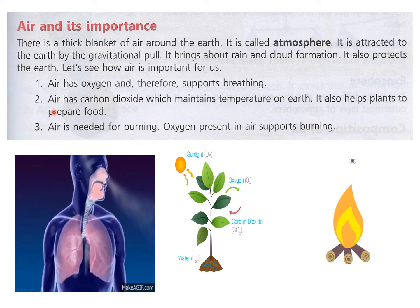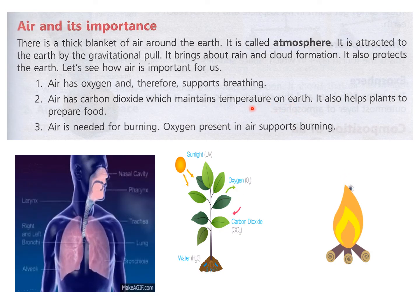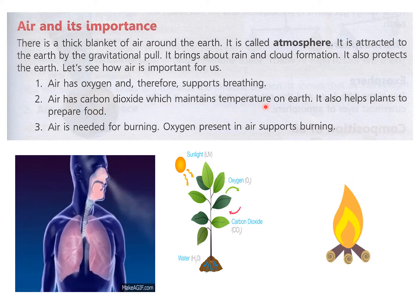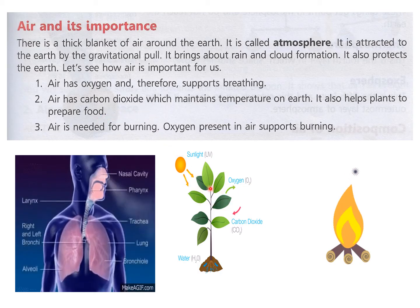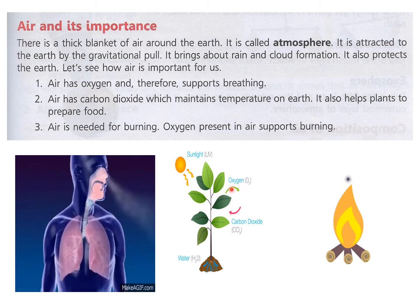Number two: air has carbon dioxide which maintains temperature on earth. Carbon dioxide traps the heat of the sun and maintains the temperature — if there were no carbon dioxide in the atmosphere the earth would be very cold. It also helps plants to prepare food through photosynthesis: the leaf takes in carbon dioxide from the air and, after preparing food, gives out oxygen.